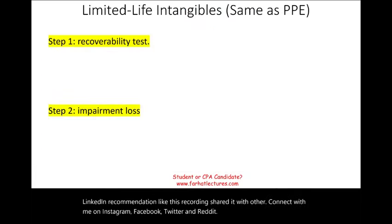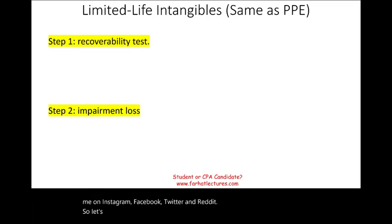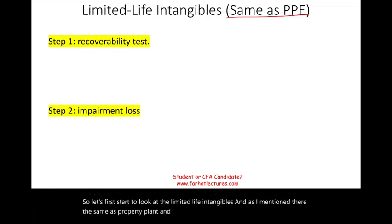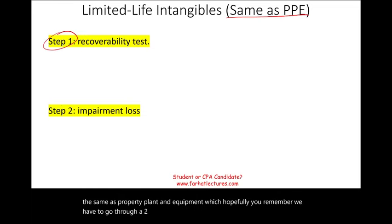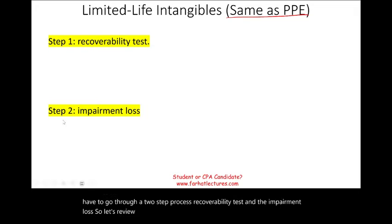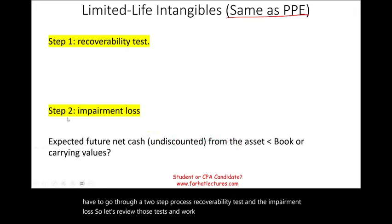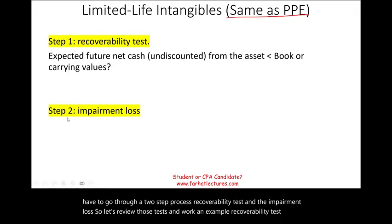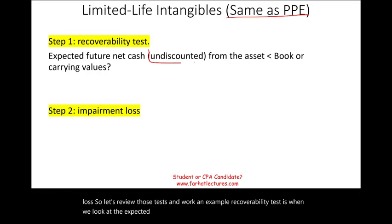Let's first look at limited life intangibles. As mentioned, they're treated the same as property, plant, and equipment. We have to go through a two-step process: the recoverability test and the impairment loss. The recoverability test is when we look at the expected future cash flow — undiscounted — and compare that to the book value.